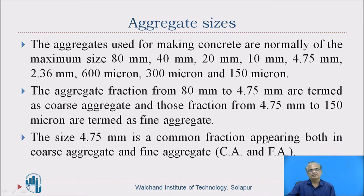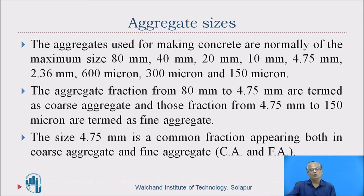Aggregate sizes: The aggregates used for making concrete are normally of the maximum size 80 mm, 40 mm, 20 mm, 10 mm, 4.75 mm, 2.36 mm, 600 micron, 300 micron, and 150 micron. The aggregate fraction from 80 mm to 4.75 mm is termed as coarse aggregate. The fractions from 4.75 mm to 150 micron are termed as fine aggregates — that means sand. The size 4.75 mm is a common fraction appearing in both coarse and fine aggregates — remember.